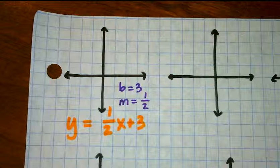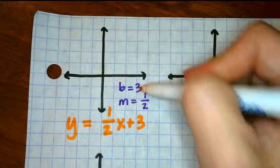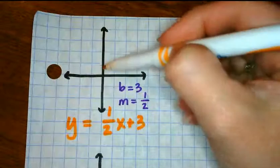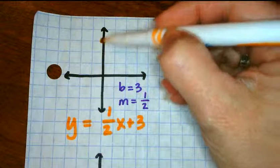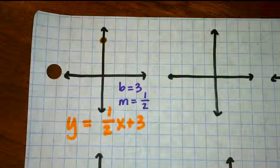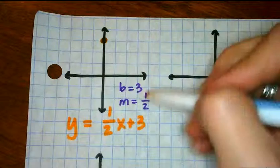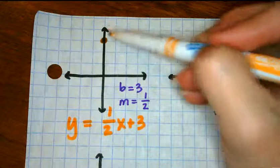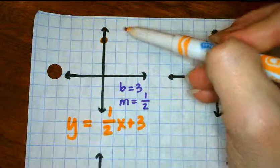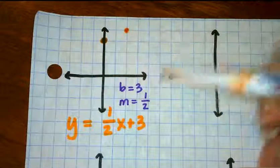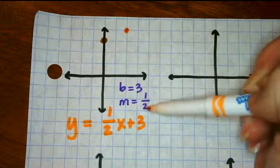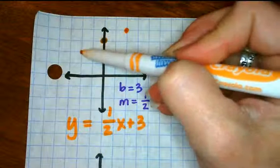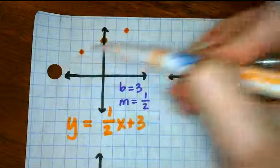First thing we're going to do is start with the b. I need to put a point on the y-axis at 3. So I have a point right there on the y-axis at the 3. Now I'm going to do the slope. We're going to use the slope in two directions. We can go up 1 and over 2 because our slope is rise over run. But I could also go down 1 and left 2 and my points will still line up.